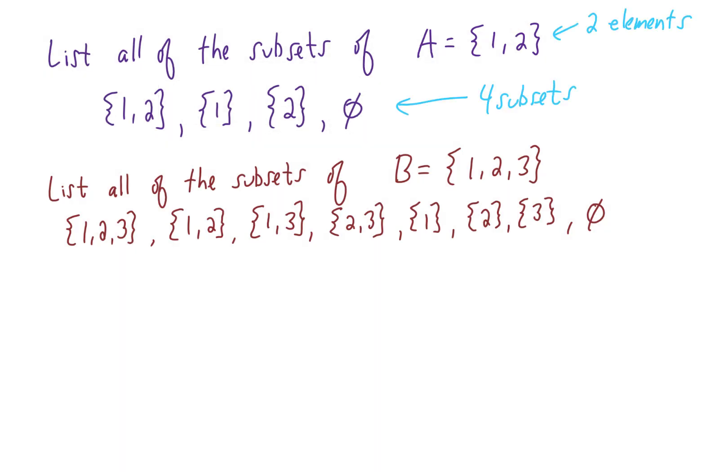So up here, we had a set that had two elements in it, and we discovered that that set had four subsets. Then we looked at a set that had three elements in it, and we discovered that this set has eight subsets. Now I guess you can just trust me on this or you can write it out yourself, but if we looked at a set that had four elements in it, we would find that that set had 16 subsets. So every time we add an element to a set, our number of subsets doubles.